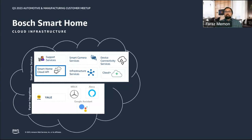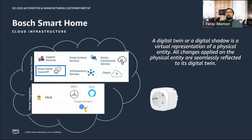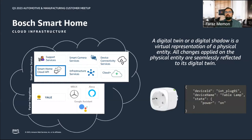Today we will focus on the smart home cloud API, which is based upon the concept of digital twin. A digital twin or digital shadow is a virtual representation of a physical entity, and all changes applied on the physical entity are seamlessly reflected to its digital twin. So if our smart plug is the physical device, a digital representation of it could be a JSON document showing the state of the smart plug, its name, and a device ID.